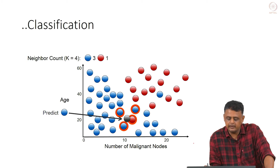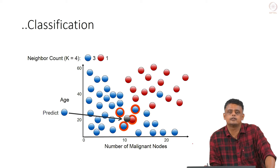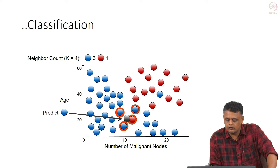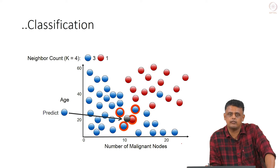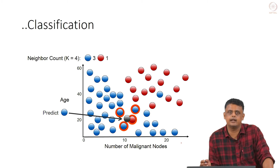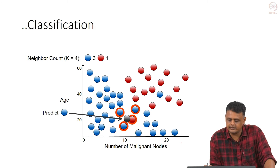We can keep increasing the number of neighbours. When we consider 4 nearest neighbours, 3 out of the 4 points correspond to patients who survived, so we can safely predict that the patient will survive.